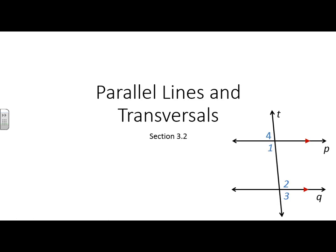Section 3.2 is on parallel lines and transversals. In section 3.1, we talked about lines being cut by a transversal. Now we're going to learn a special relationship that parallel lines have when they're cut by transversals. We talked about corresponding angles, alternate interior angles, alternate exterior angles, and consecutive interior angles, and they will have a special relationship.